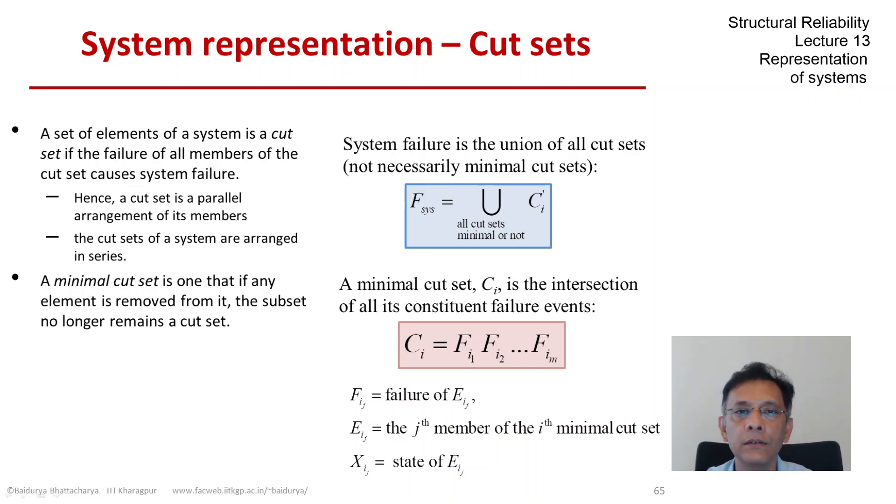So let's define Ci, the ith minimal cut set in terms of its constituents. Say cut set i has i sub m members and they are fi1, fi2, all the way up to fim.